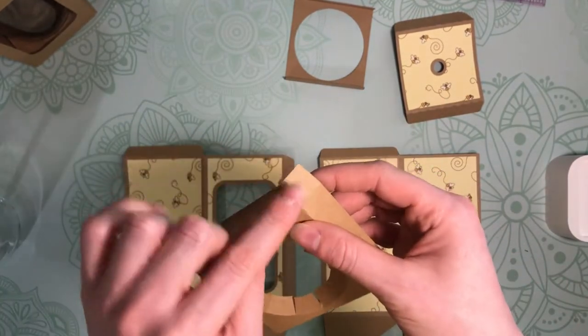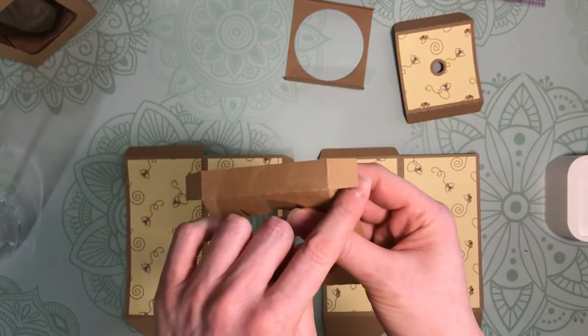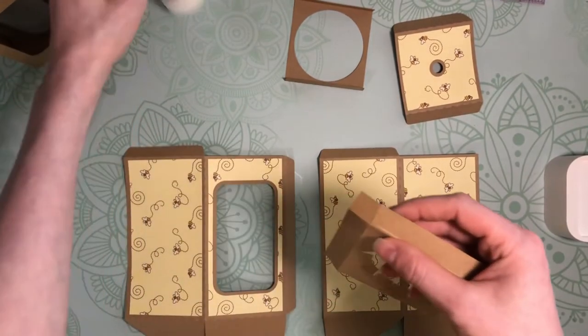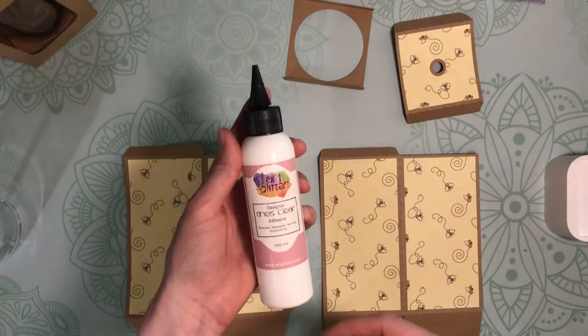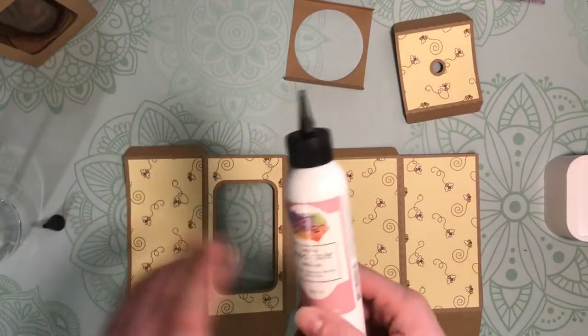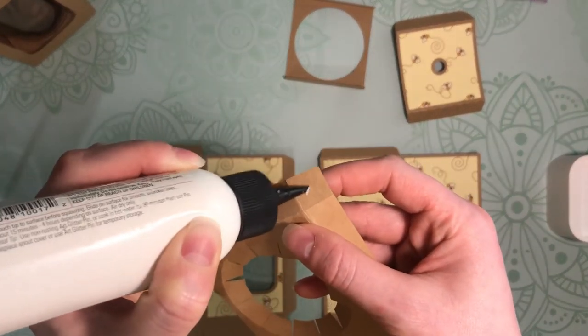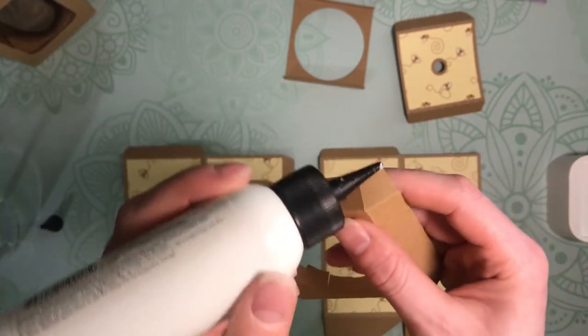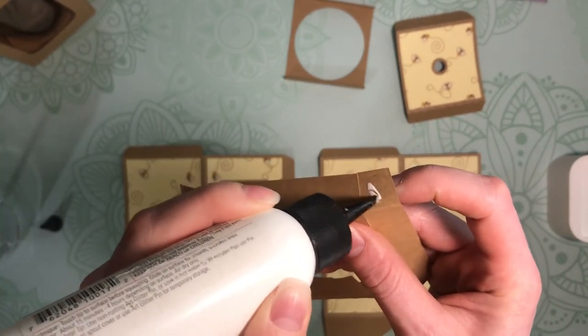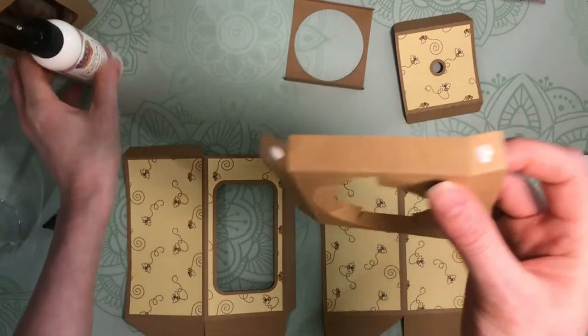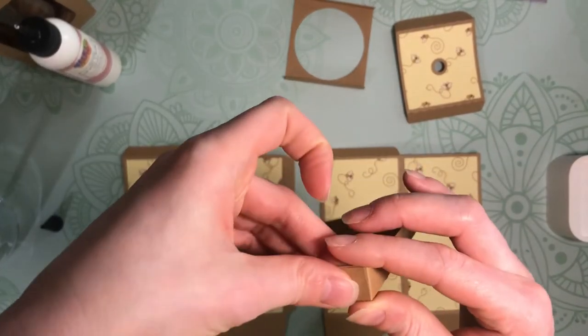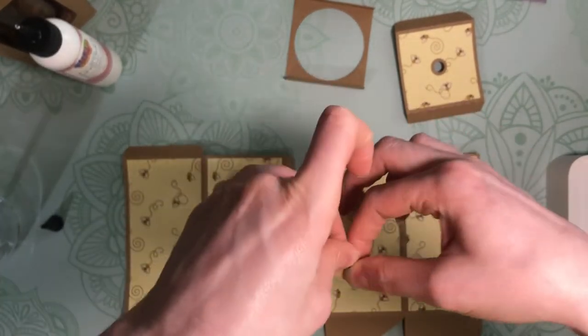First thing, we're going to start by adding some glue to these tabs, and I like to use Art Glitter Glue. There's no actual glitter in it, but I really like it for cardstock. It gives a nice strong hold.